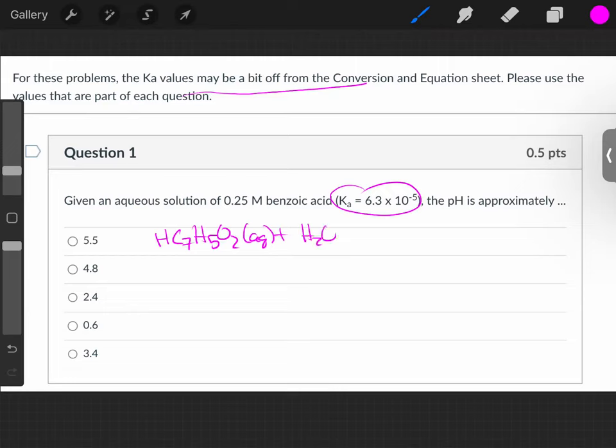This is a Ka reaction because it's an acid. The other thing is always water. Take and donate a proton. You're going to have hydronium and C7H5O2 minus aqueous.